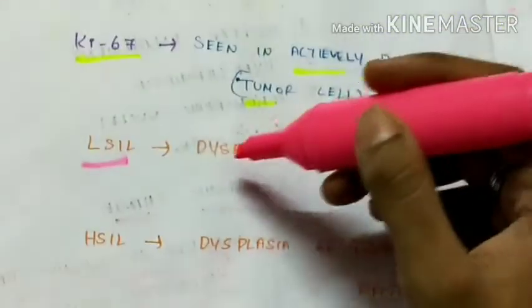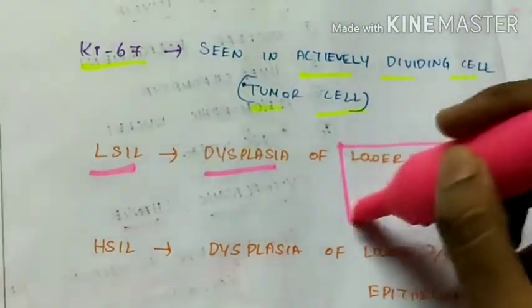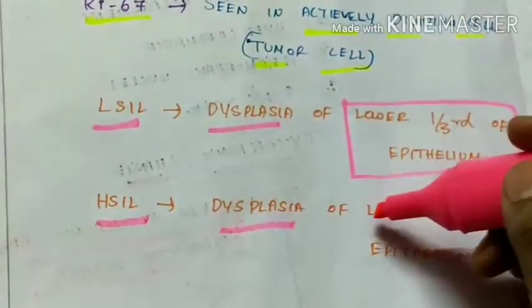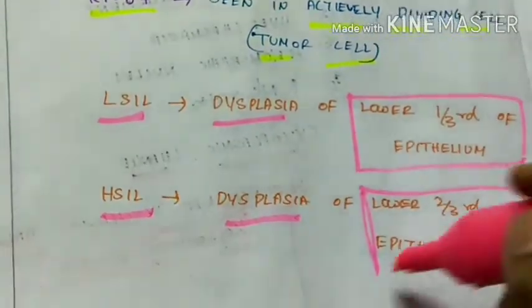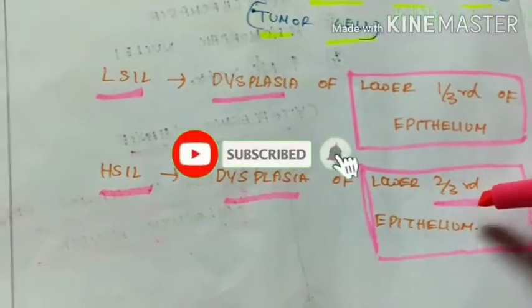The low grade SIL, here there is dysplasia of lower one third of the epithelium. Whereas in high grade SIL, there is dysplasia of lower two thirds of the epithelium. As two thirds is involved, this is considered as high grade.